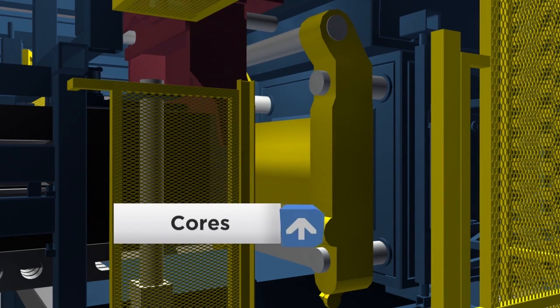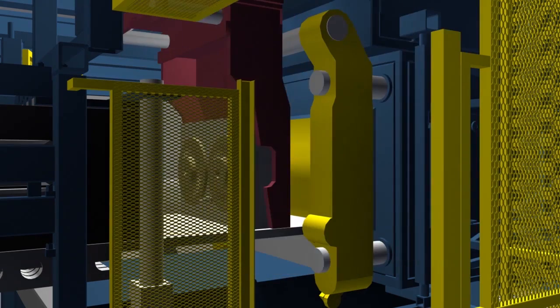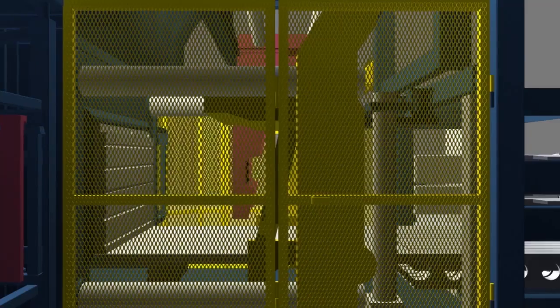Cores are placed between the mold cavities to produce the desired casting shape. A filter is placed in every mold to smooth the flow of iron and remove impurities, enhancing the quality of the finished product.